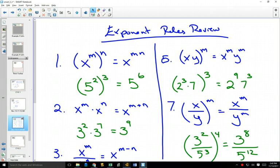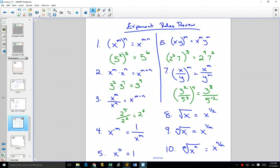x to the m times x to the n. If the bases are the same and you're multiplying 2 powers, you can add the exponents. Do you remember that? Like 3 squared times 3 to the 7? 3 to the 9? Can you still see it if I do this? Or does it get too small at the back? It's good?